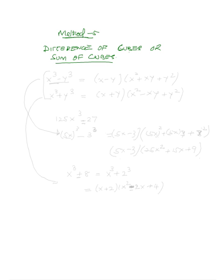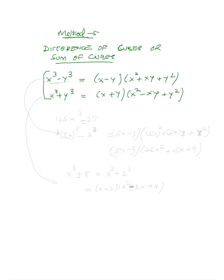Method 5 is difference of cubes or sum of cubes. The key identities are: x³ - y³ = (x - y)(x² + xy + y²) for difference of cubes, and x³ + y³ = (x + y)(x² - xy + y²) for sum of cubes. These identities can be used to factor expressions involving perfect cubes. Note also that x² + y² has no real factors, but x² - y² does.